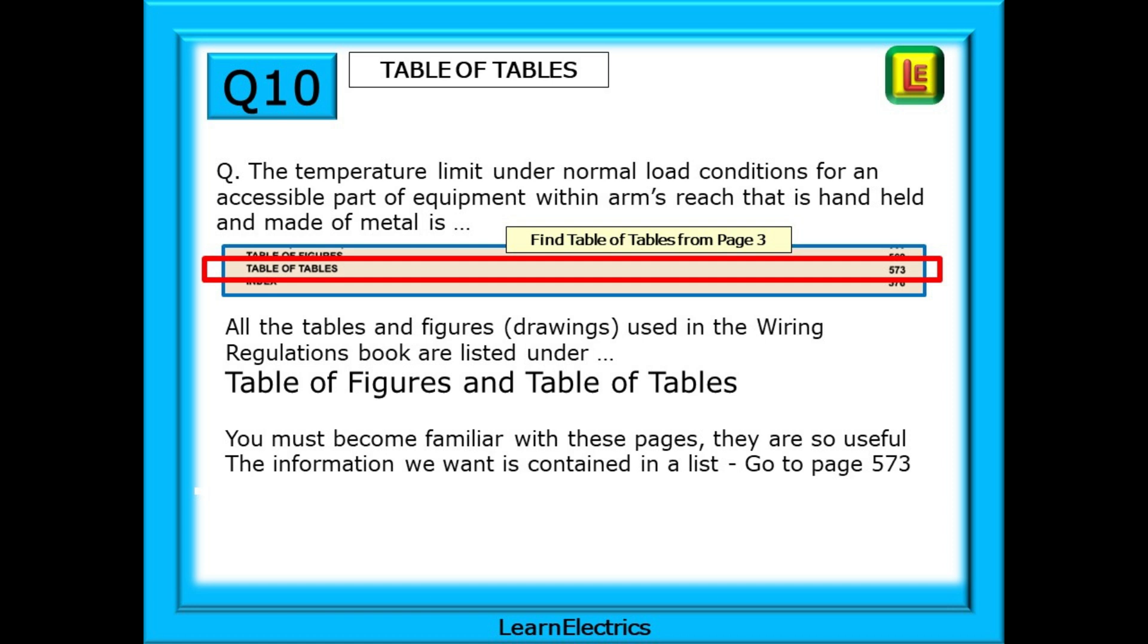Table of Tables, for example, is a list of all the tables in the book and allows you to select the table that you need and go directly to that page. Let's see how this example works.